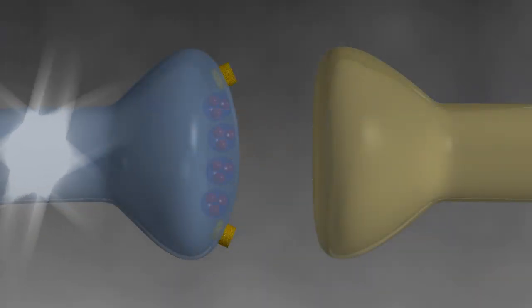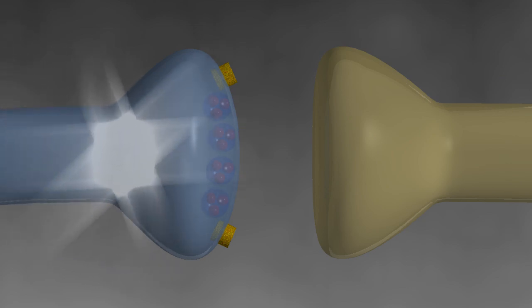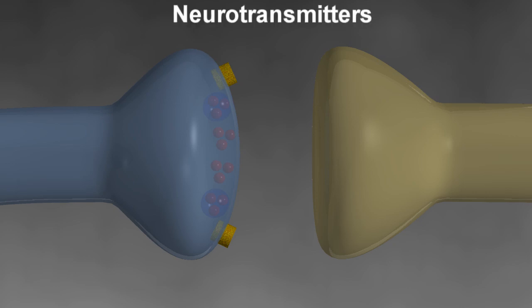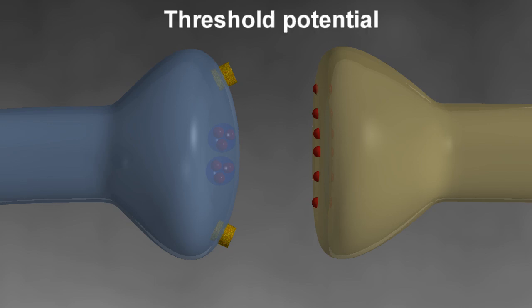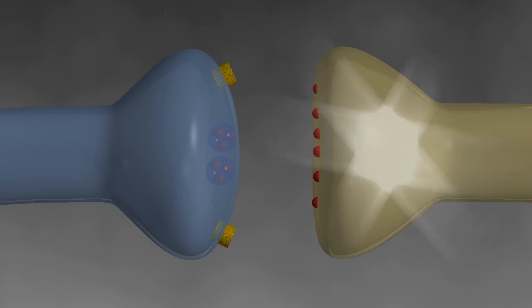When an electrical signal propagates down the axon, it causes small chemical containing vesicles to burst open or degranulate. These chemicals, or neurotransmitters, spill out into the synapse and attach to receptors on the postsynaptic cleft or dendrite of the next target neuron. Once enough chemical is present, a threshold potential is reached, initiating a new electrical impulse down the neuron to the next synapse.